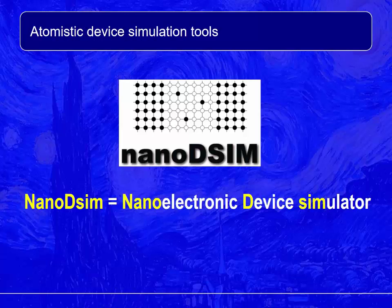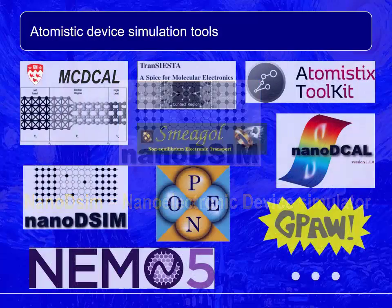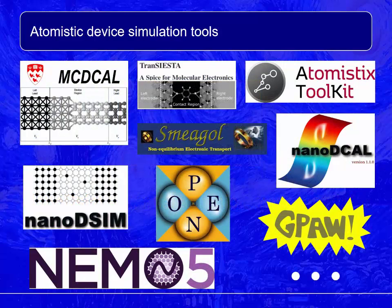NanoDCIM is just one example of many atomistic device simulation tools. Other software tools differ from NanoDCIM by basis type, core-line treatment, and implementation details. But all of them can predict transport properties of nano-electronic devices without relying on empirical analytical parameters, and the predictions are in good agreement with experimental data as well as other empirical models.